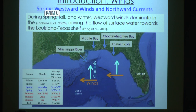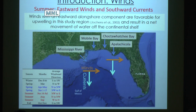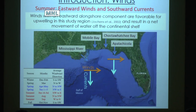In springtime, westward winds and northward currents prevail. Moving into summer, those winds weaken and switch, with a greater instance of eastward prevailing winds, and through Ekman transport, southward currents pull water off the continental shelf, driving wind-driven upwelling.